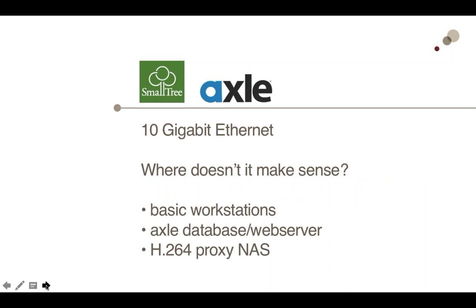The price points for 10 gigabit Ethernet are coming down to the point where it's 10 times the performance for basically two times the cost or a little less. It's a significant upgrade for not a significant amount of dollars. Whenever possible we try to steer customers to 10 gigabit Ethernet, because it just future-proofs their solution. One thing that surprised me was that the dual-port Smalltree 10 gig card costs only about $100 more than the single-port — so there's almost no reason not to go with the dual and get twice the bandwidth.